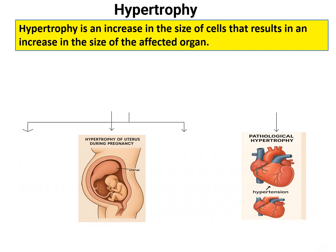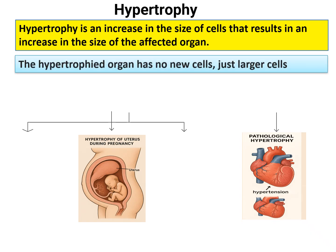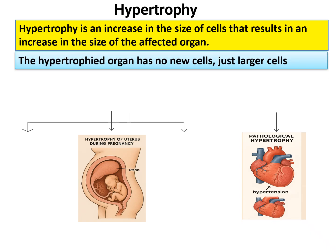Hypertrophy is an increase in the size of cells that results in an increase in the size of the affected organ. 'Trophy' means size, 'hyper' means increased — so increase in size is hypertrophy. A hypertrophied organ has no new cells, just larger cells, and because of the increased cell size, the size of the organ is increased.